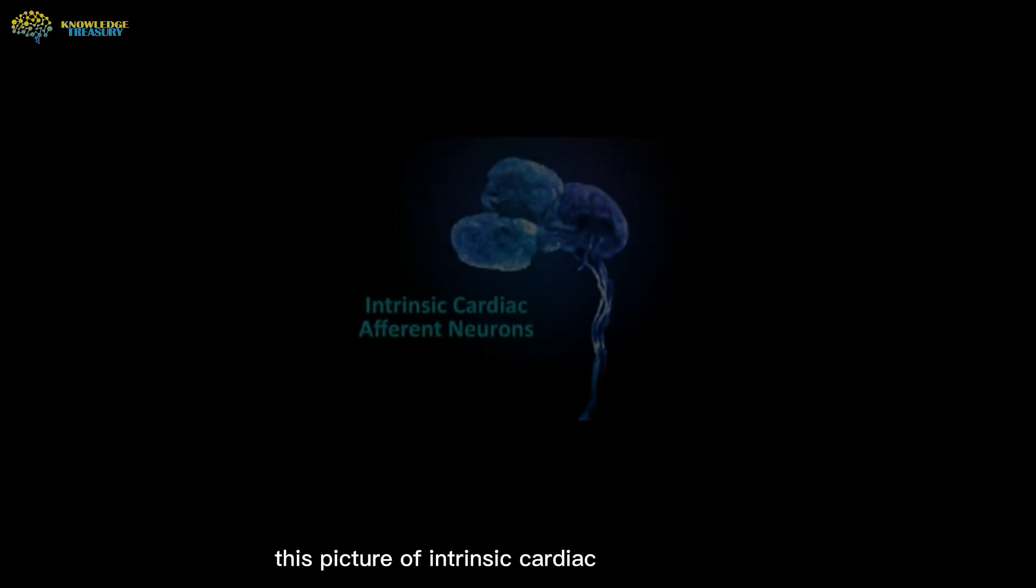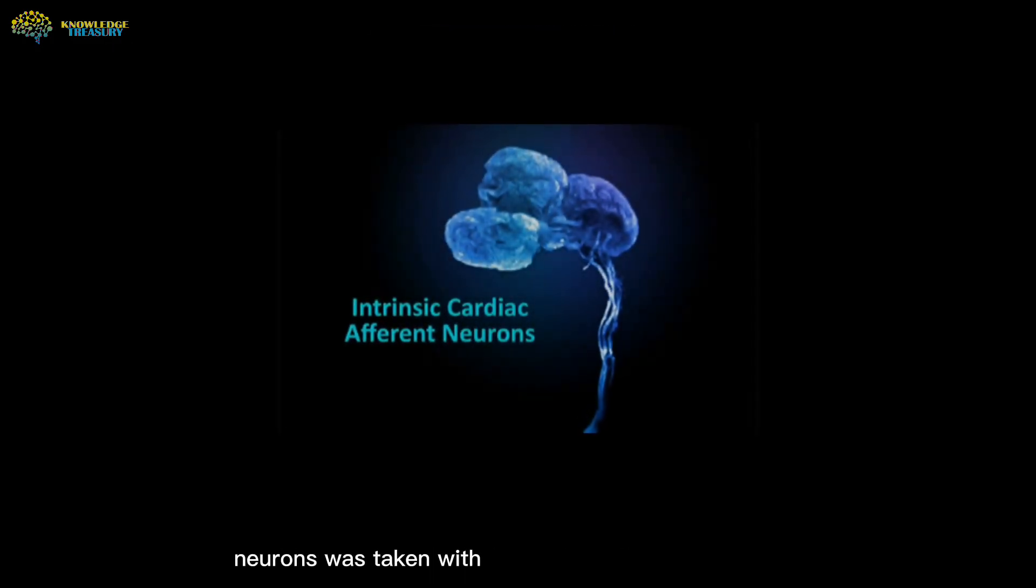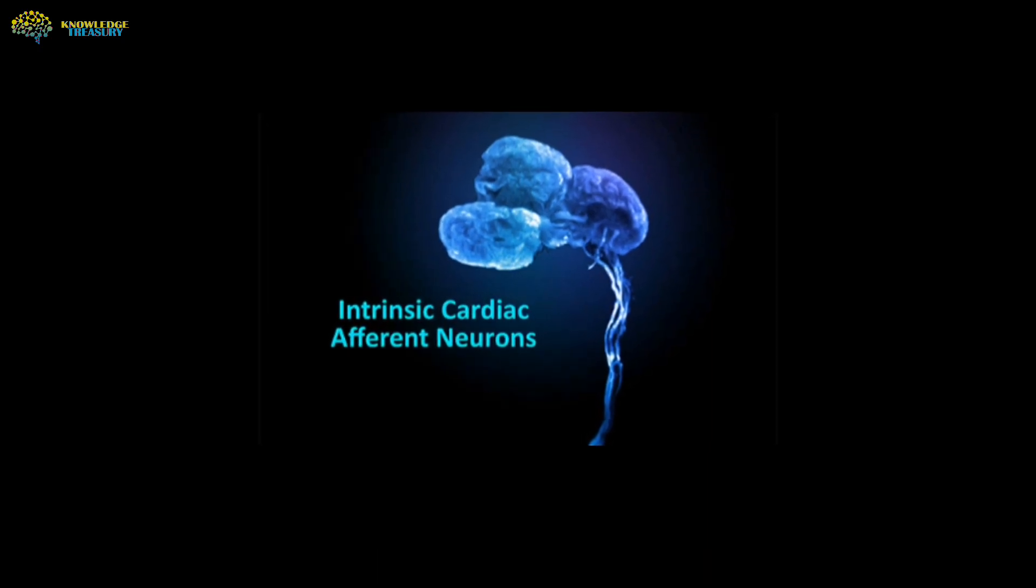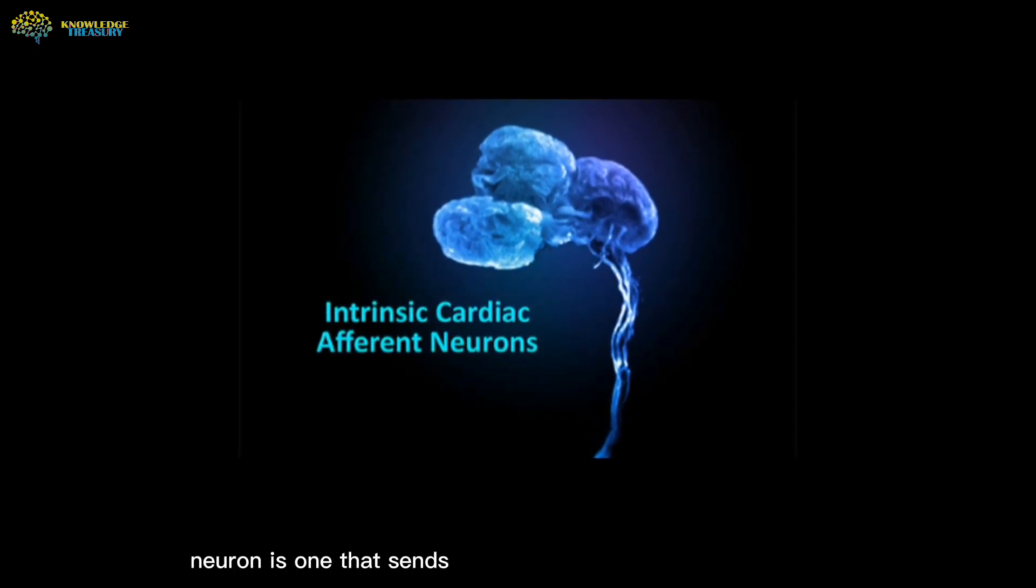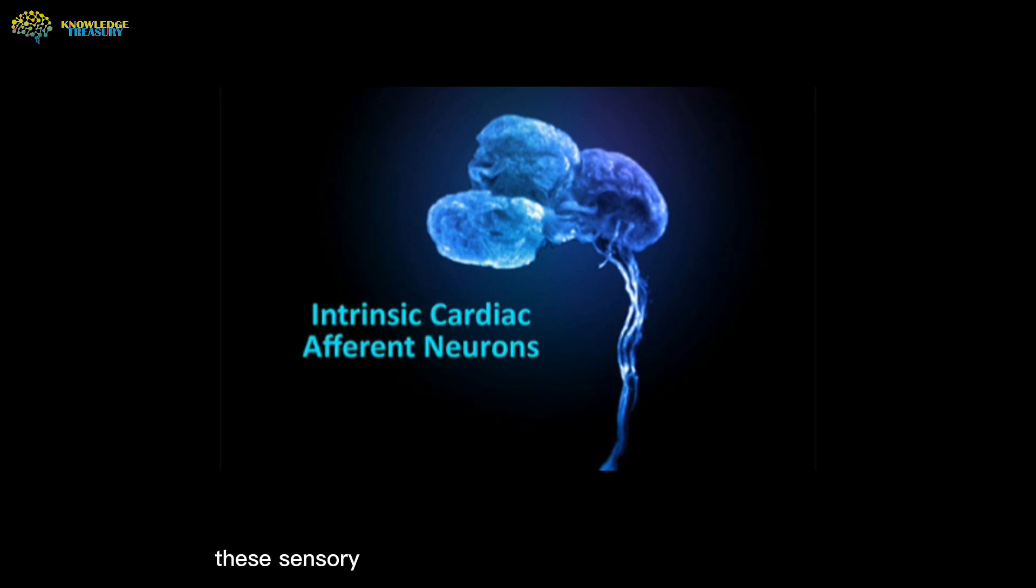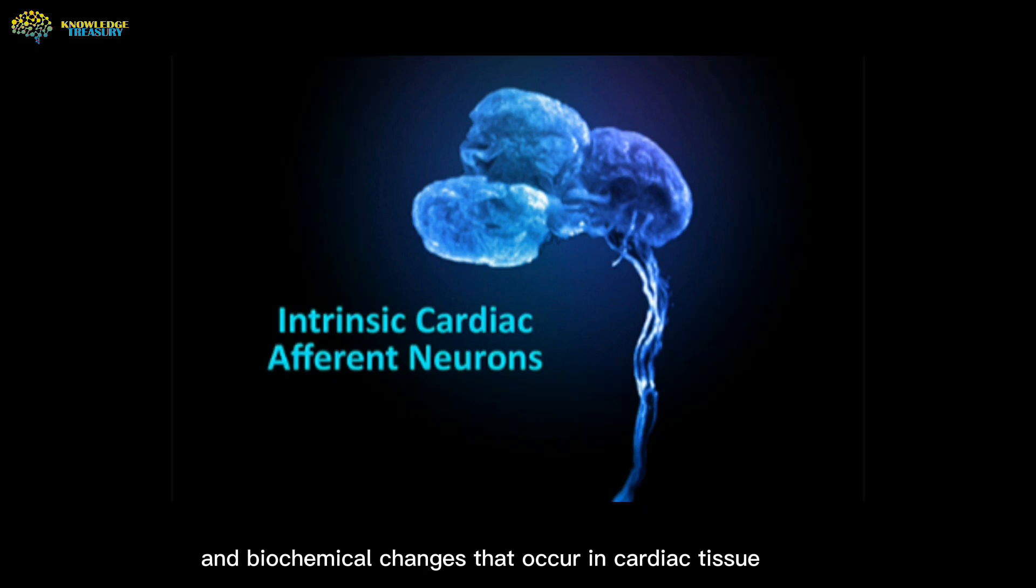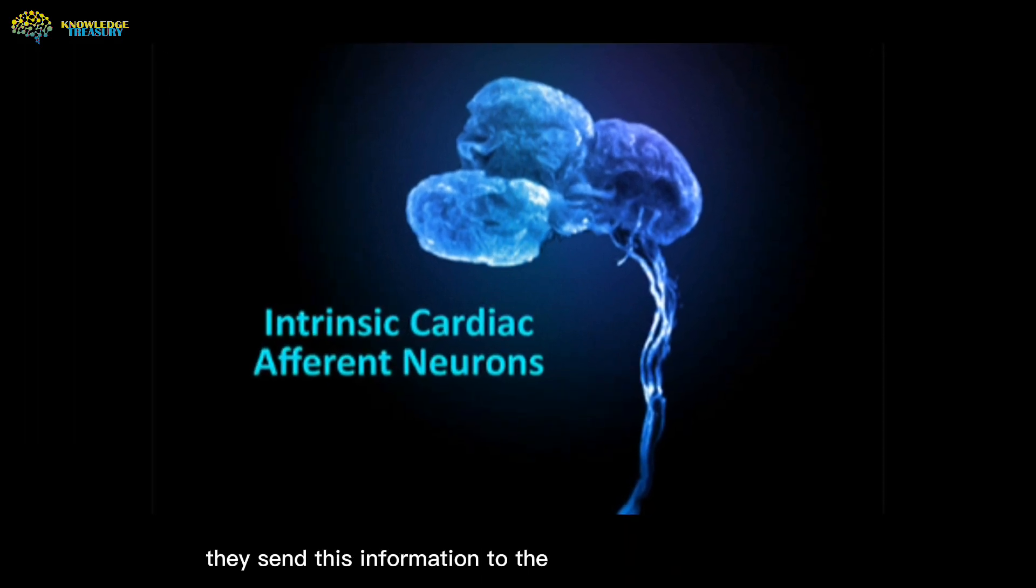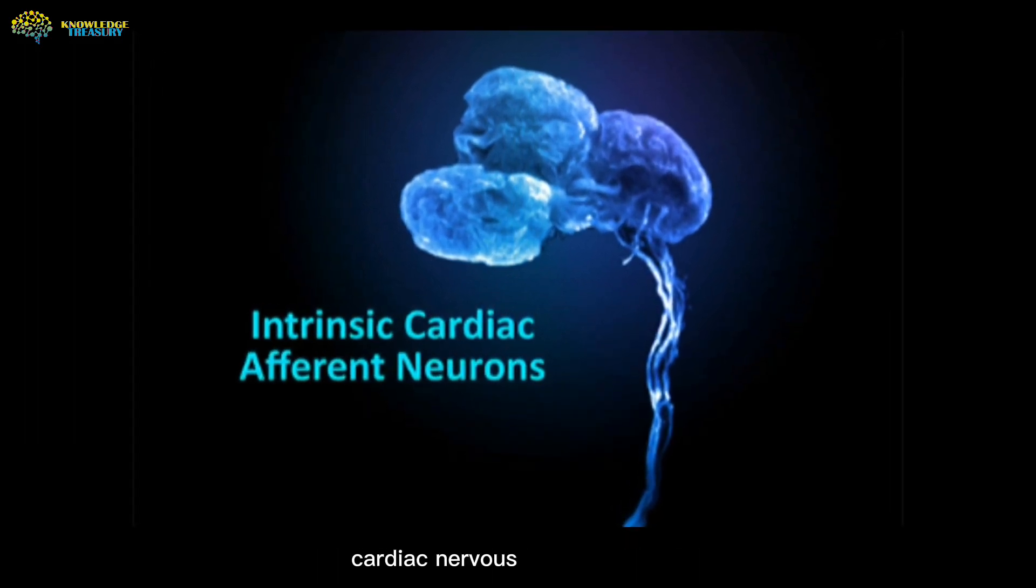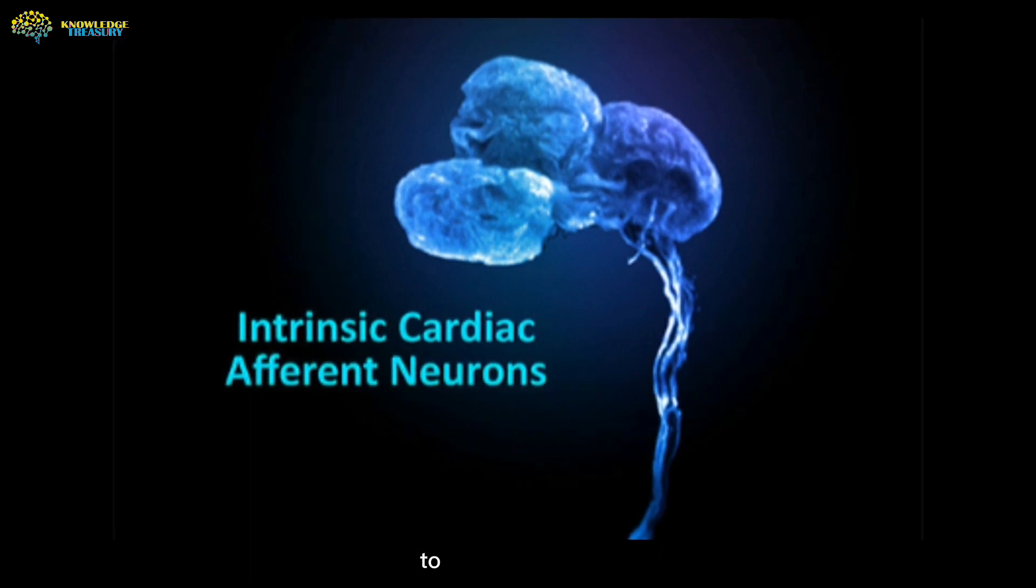This picture of intrinsic cardiac afferent neurons was taken with a confocal microscope. An afferent neuron is one that sends information to another neuron. These sensory neurons detect the local mechanical and biochemical changes that occur in cardiac tissue. They send this information to the rest of the intrinsic cardiac nervous system and in many cases to the brain.